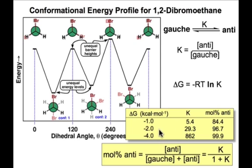If it's lower by 2 kilocalories per mole, we're up to 96% anti. And if it's lower by 4 kilocalories per mole, we have almost 100% of the anti-conformation.